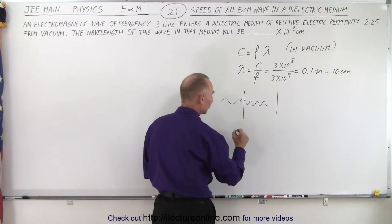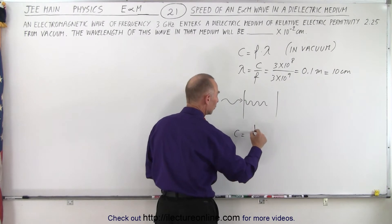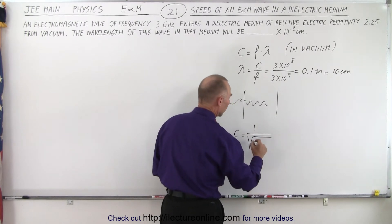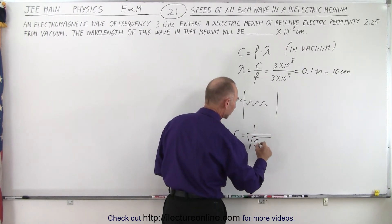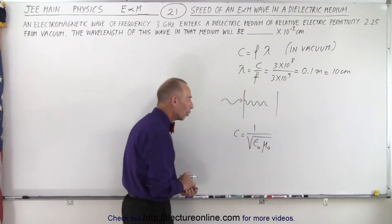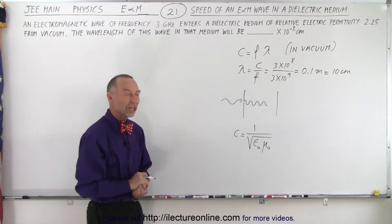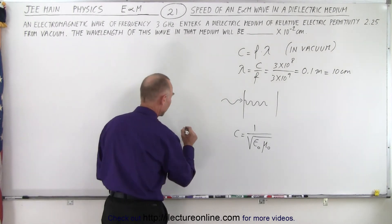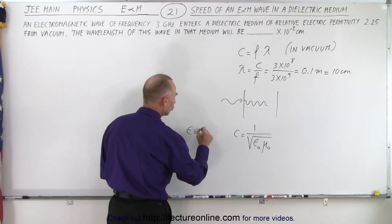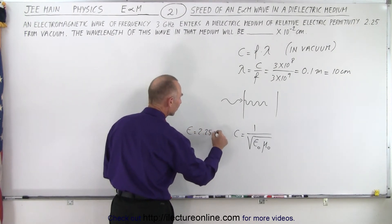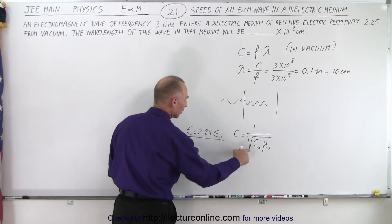Now also what we need to know is that the speed of light is equal to 1 over the square root of the electric permittivity times the magnetic permeability. Now what has changed? What they're telling us here is that ε is now equal to 2.25 ε₀. So that would go in here.